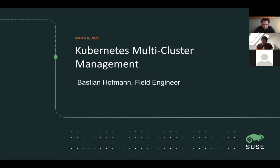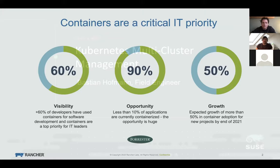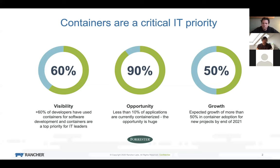Before we go into Kubernetes and all the infrastructure and orchestration, let's step back and look at why containers are actually now critical in IT. The latest Forrester surveys found that 62% of developers are already using containers somehow for their software deployments and IT infrastructure. On the other hand, probably only about 10% of applications running in production are currently containerized, but we estimate that this quota will pick up significantly — with growth of about 50% just by the end of this year.